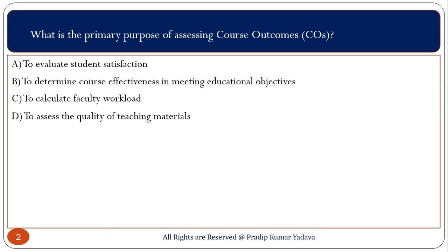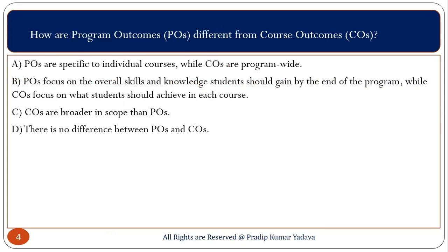When a committee designs a syllabus, during the designing process we also design the program outcome as well as course outcome. The main aim of designing course outcomes is to determine course effectiveness. There are two things: one is course outcome and one is program outcome. Course outcome is just related to a subject; program outcome is related to the whole program. For example, there is a physics subject in engineering — you can determine the course outcome of physics, but program outcome means we are talking about the whole BTech program.